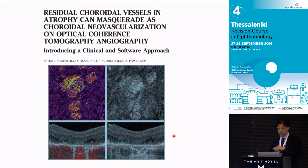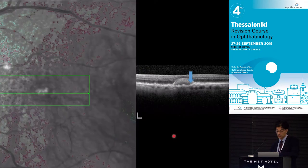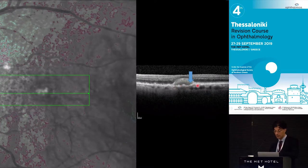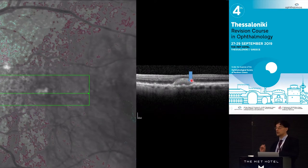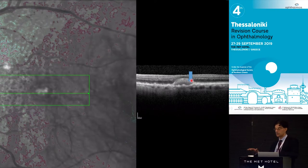For differential diagnosis, vitelliform lesions should not be injected. These appear above the native RPE as smooth domed, evenly hyperreflective material. They do not only occur in Best disease or adult vitelliform — many forms of AMD, especially reticular pseudodrusen and cuticular drusen, often coexist with vitelliform lesions. These are not a reason to inject.